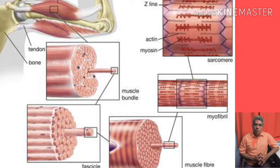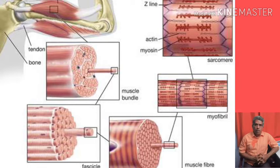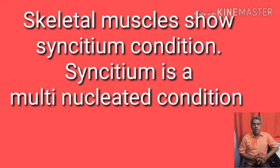If you observe the structure of the muscle fiber, each muscle fiber is covered by a plasma membrane. The plasma membrane of the muscle fiber is called sarcolemma. Below the sarcolemma, there is a multi-nucleated condition in the skeletal muscle — that means the skeletal muscle contains many nuclei. This multi-nucleated condition, if found in an animal cell, is called syncytium.